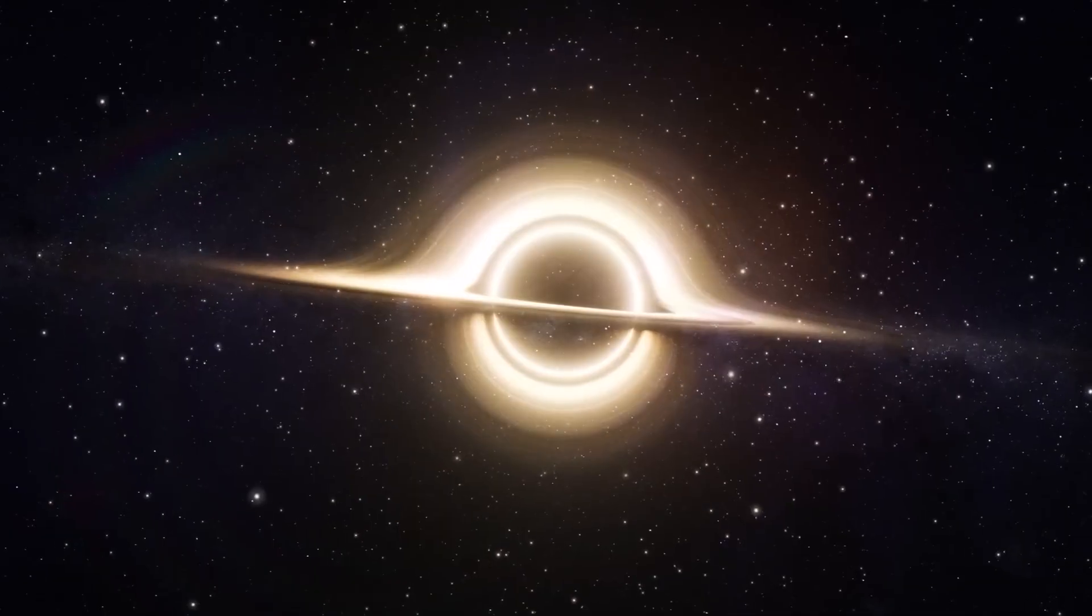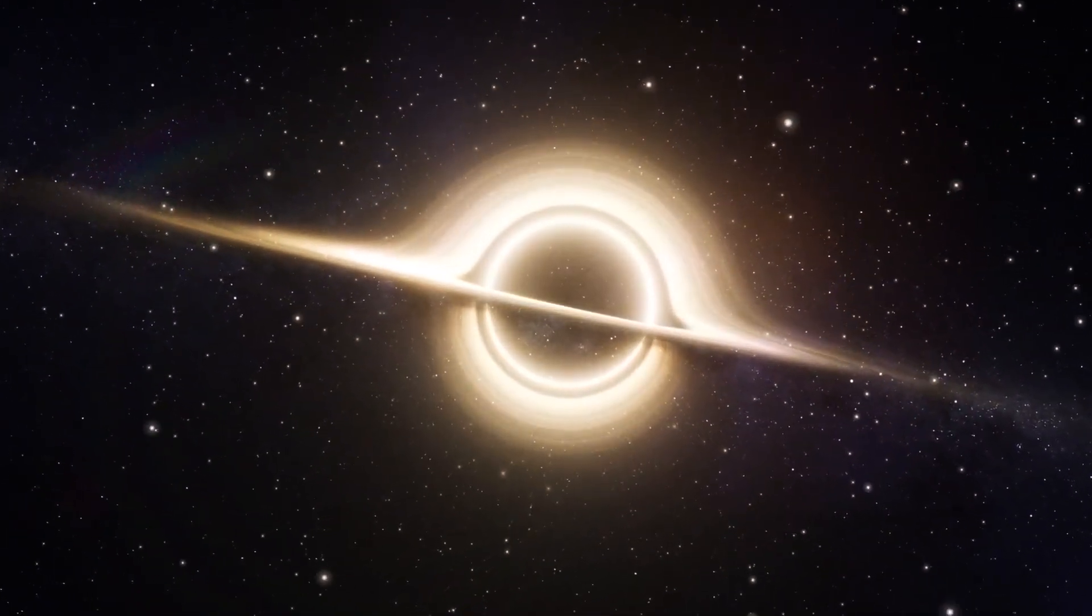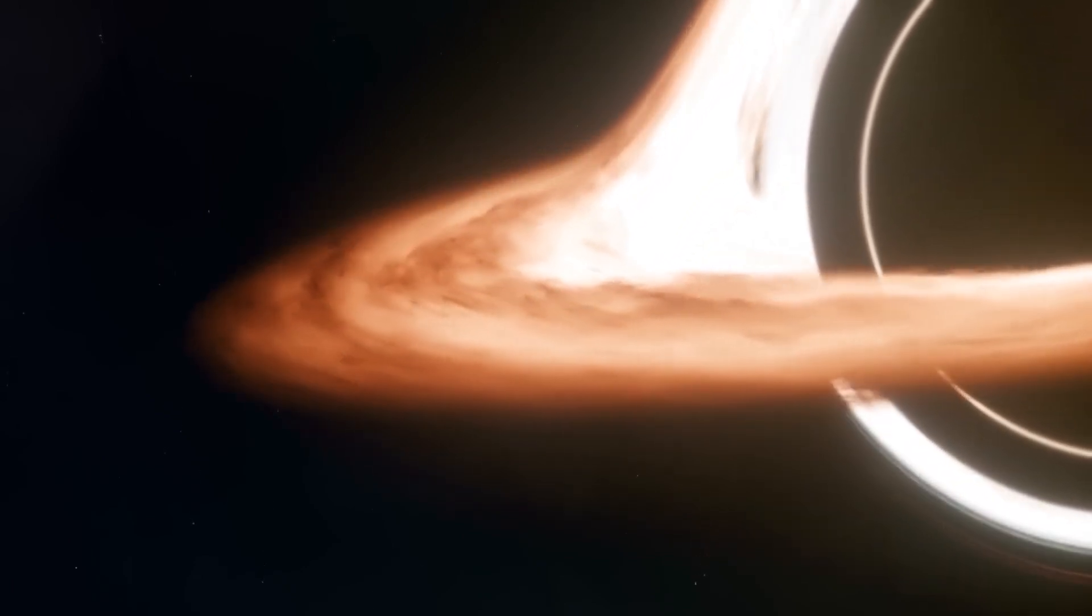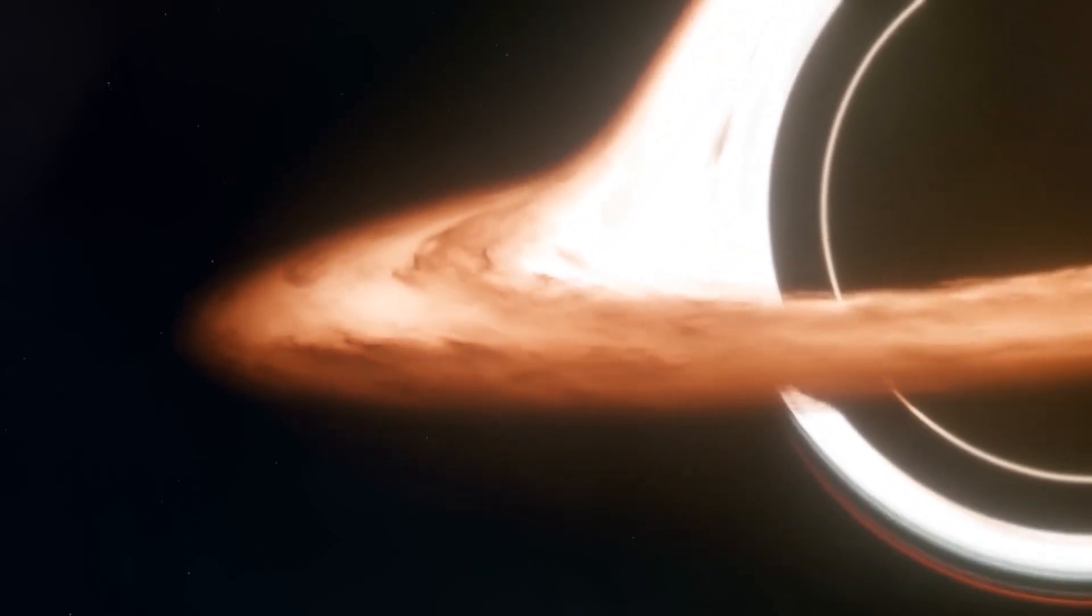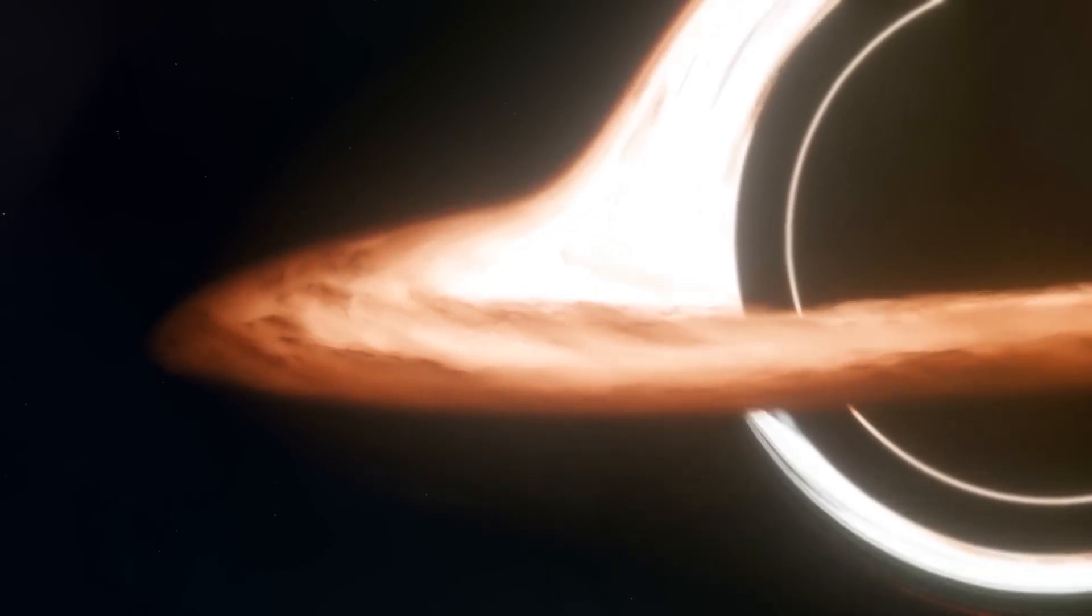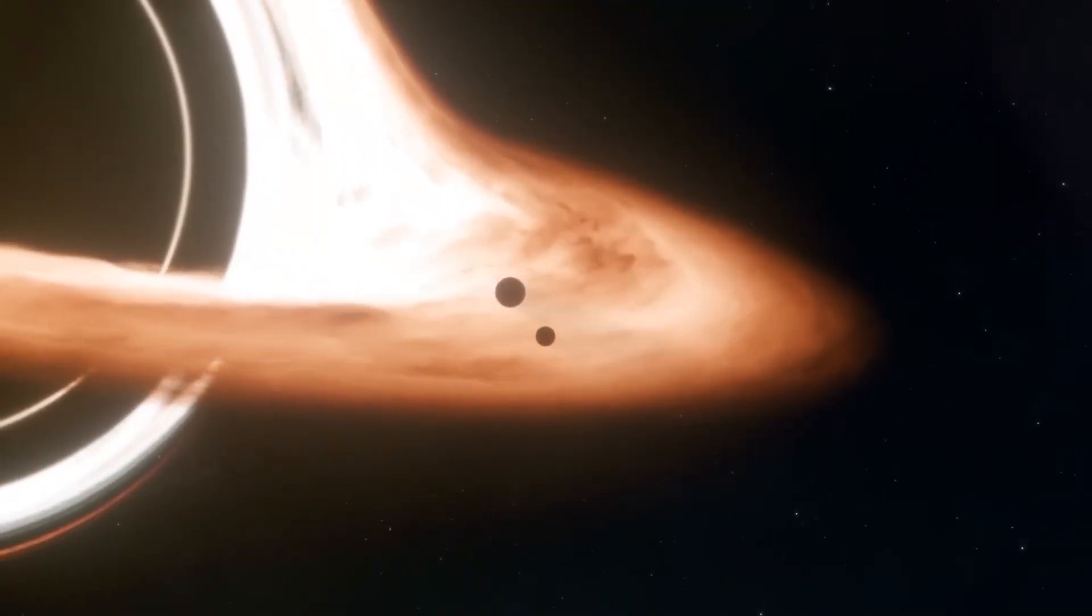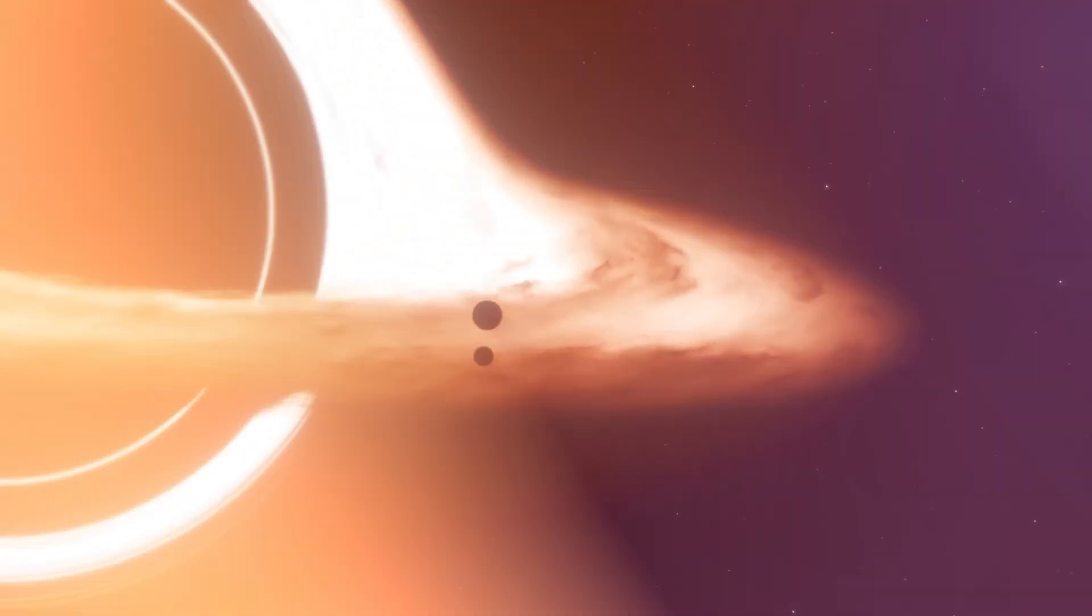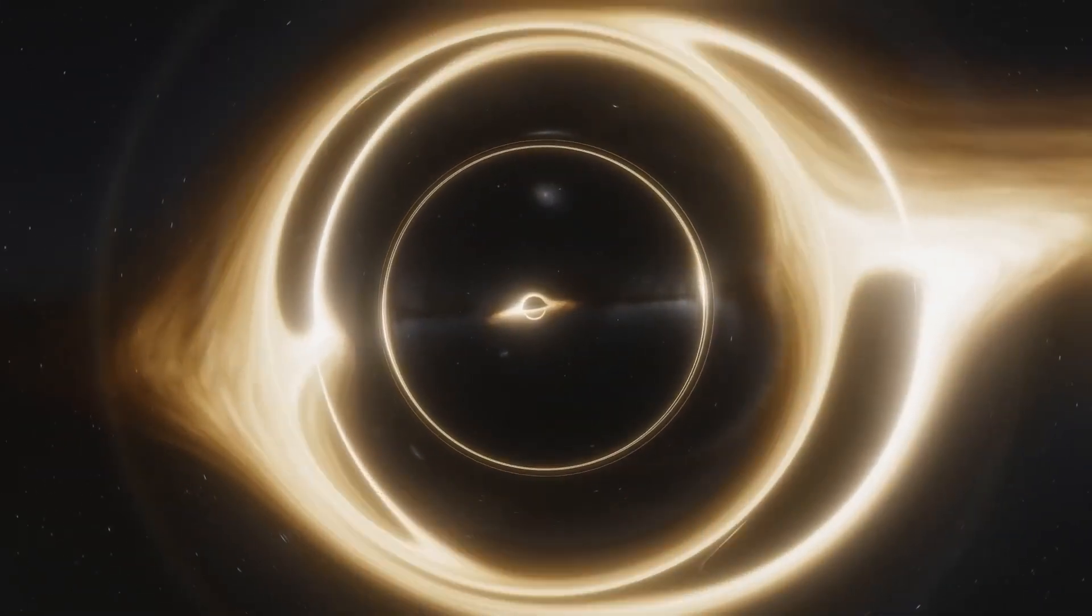For example, when matter falls into a black hole and forms an accretion disk around it, the superheated material emits X-rays detectable by telescopes. These X-ray emissions are one of the main signals used to identify black holes and study their properties. As a black hole grows after matter falls into it, its size should increase, but the situation appears to be more complex than expected.